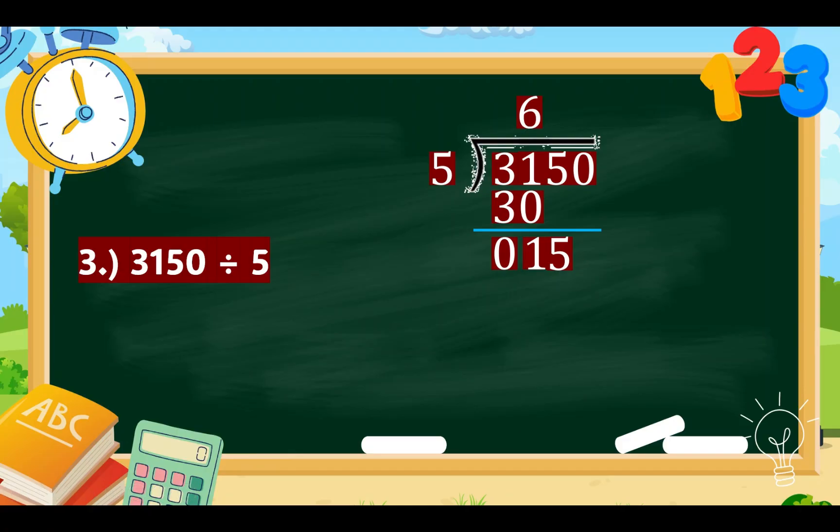D, M, S, B. 15 divided by 5 equals 3. Multiply 3 times 5 equals 15. Subtract 15 minus 15 equals 0. But since you still have one more 0 left in the dividend, then we have to bring down this 0. As you can see, there are no numbers left. So, our final answer or quotient is 630.